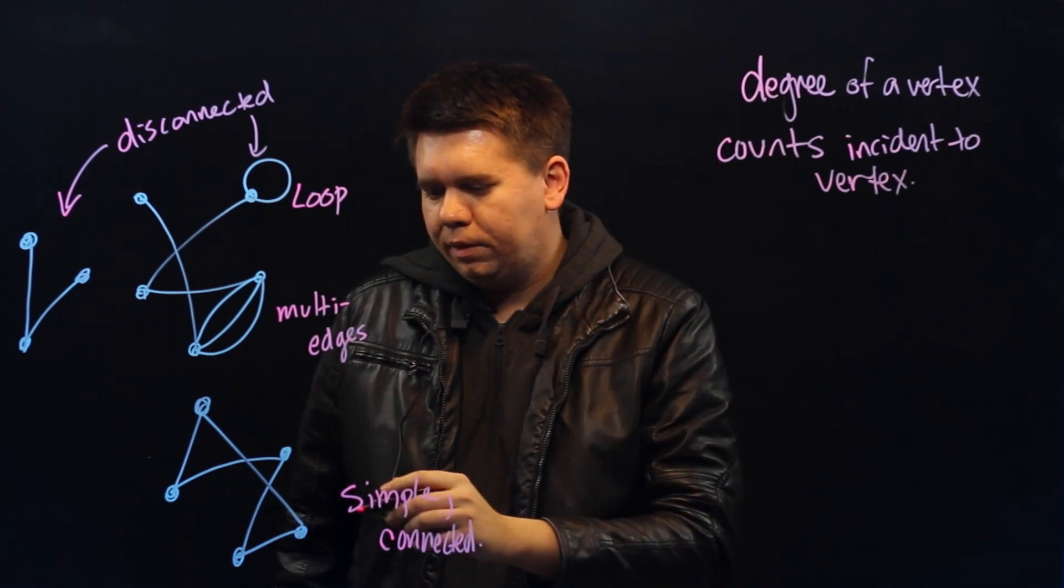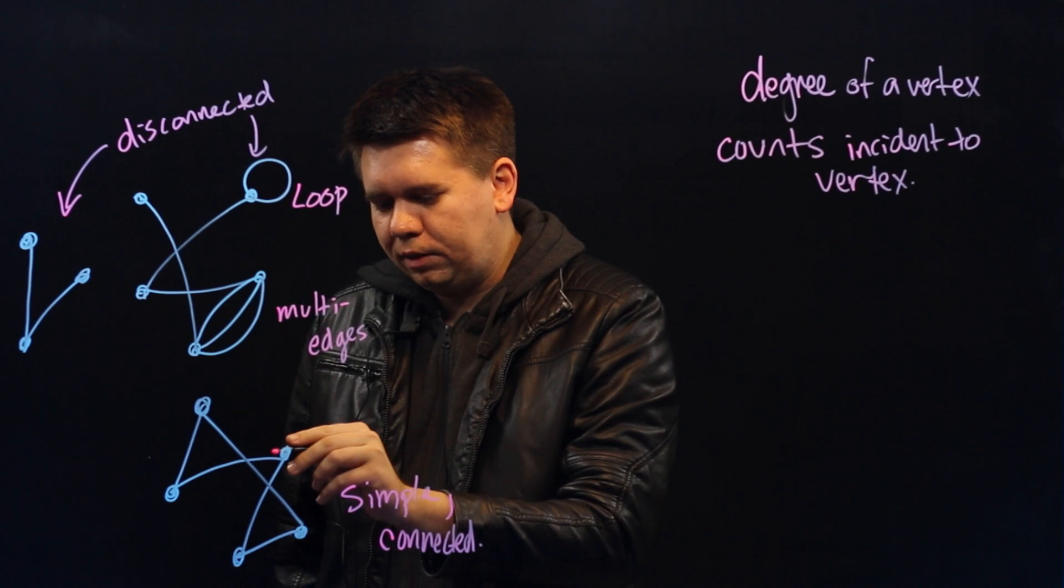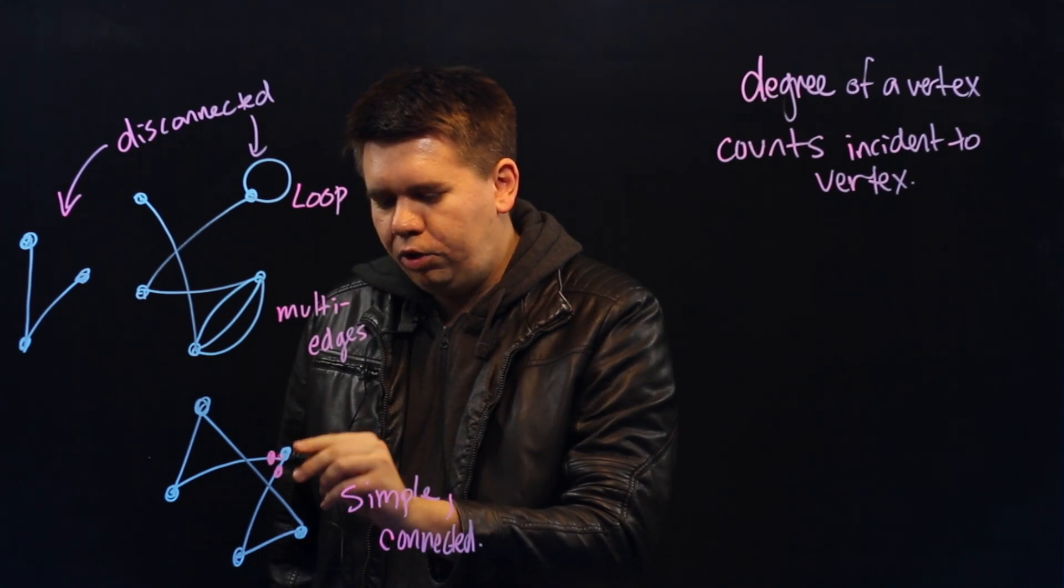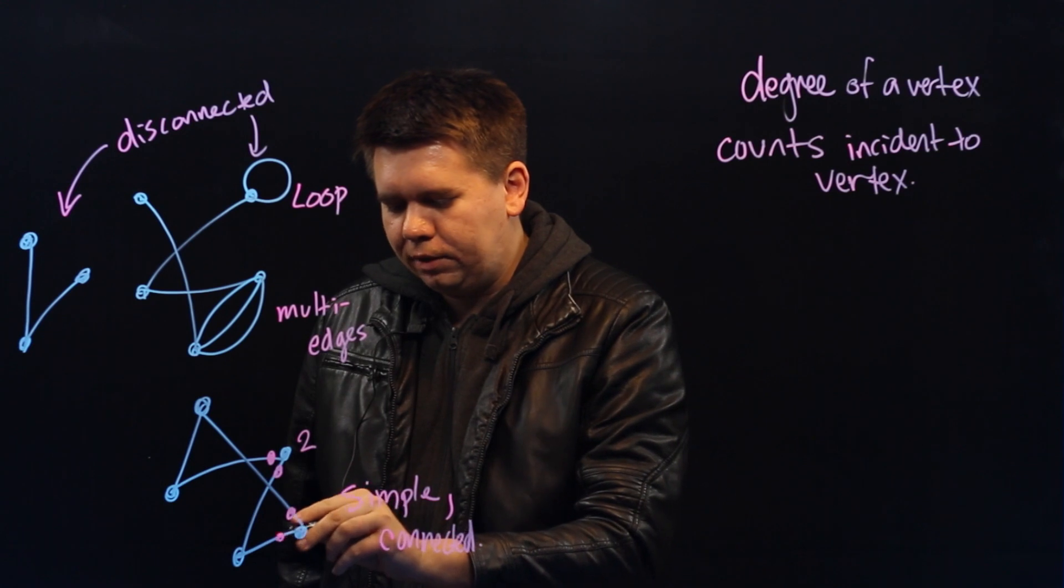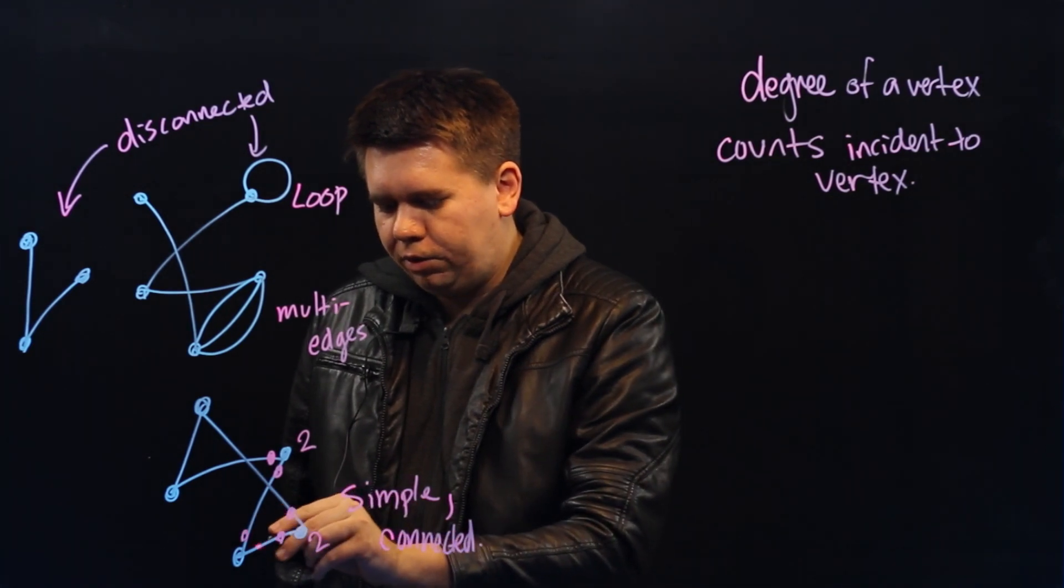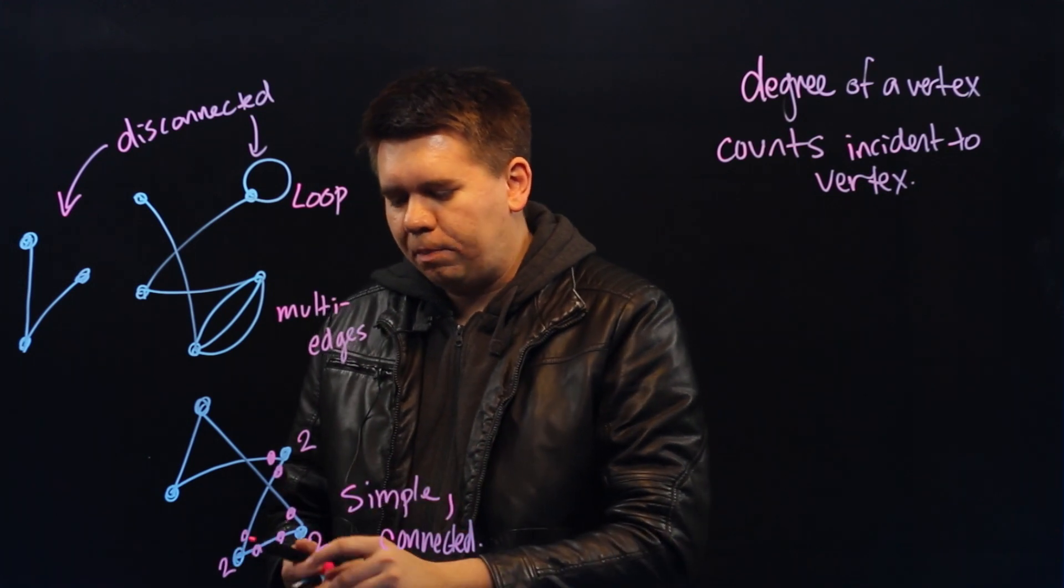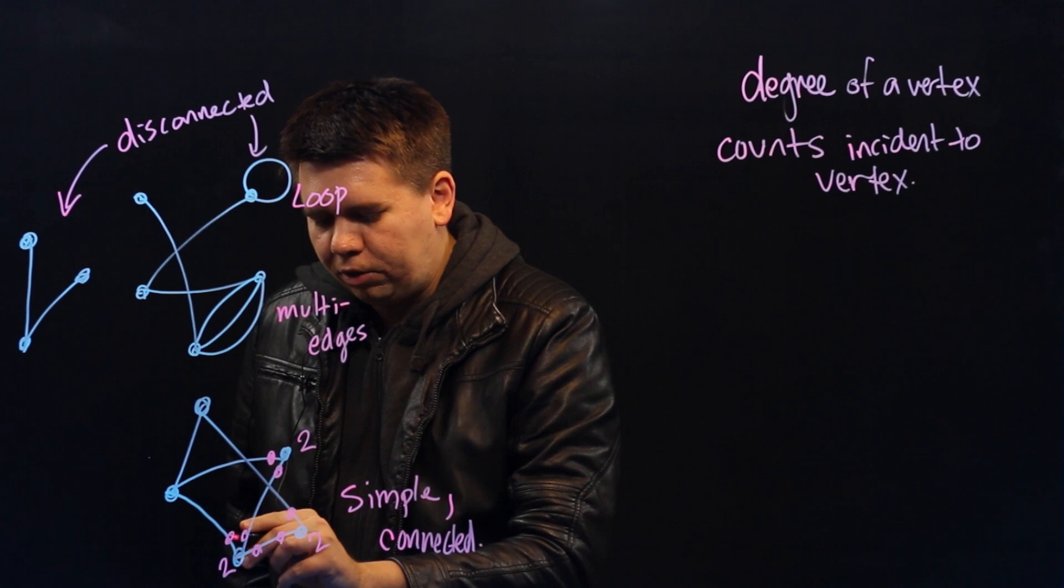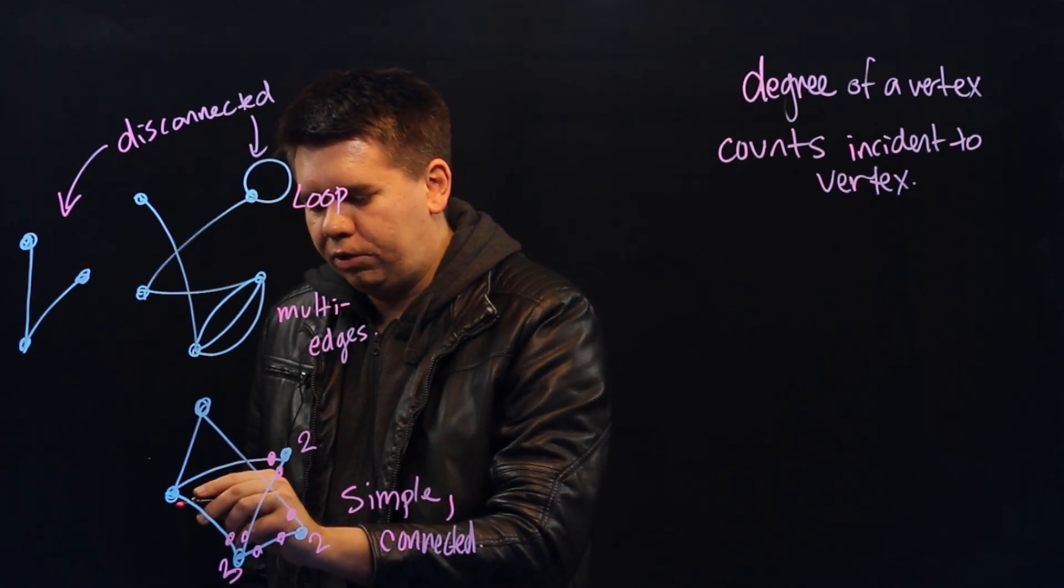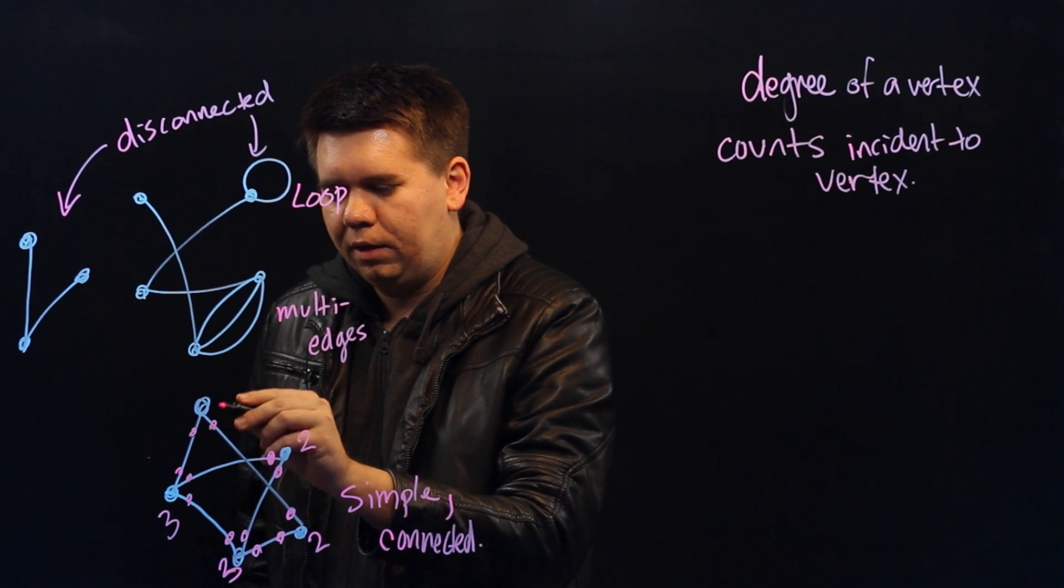For instance, in this simple graph below, we see that this vertex is incident to one, two edges. So we see it as degree two. This vertex also has degree two, and degree two. Well, this isn't very interesting, so maybe we can introduce one more edge here, to now make this degree three. Degree three, and degree two.